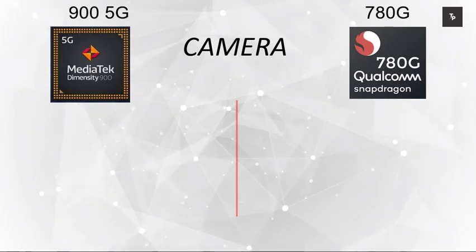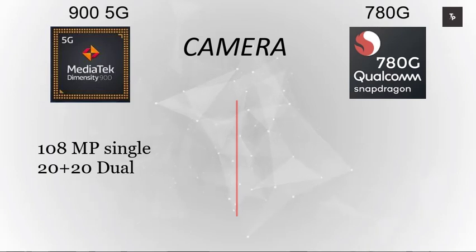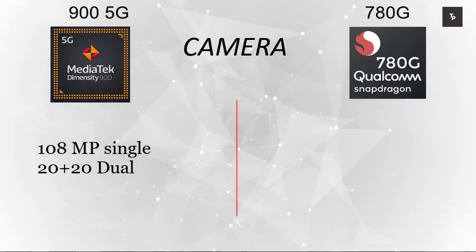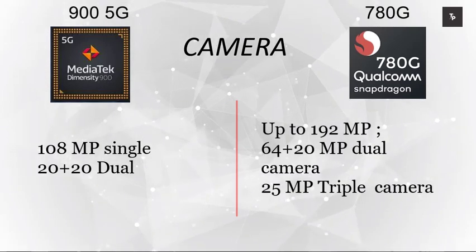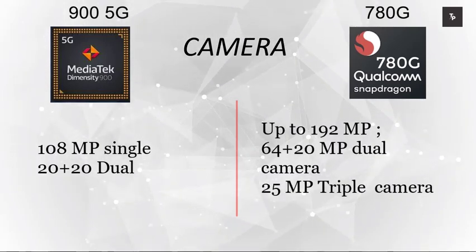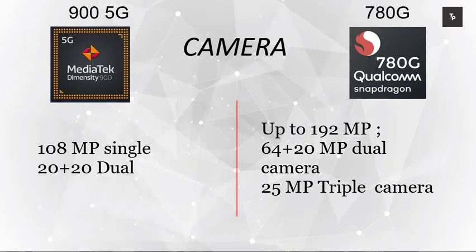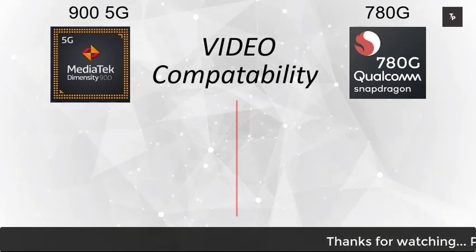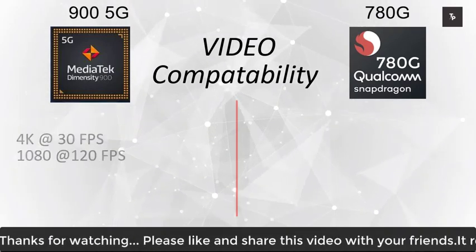Moving on to camera support, the maximum camera resolution the MediaTek Dimensity 900 can handle is 108 megapixels — currently the largest sensor available in the market — along with a 20+20 megapixel dual camera setup. The Snapdragon 780G can support up to 192 megapixels, a 64+20 megapixel dual camera, and a 25 megapixel triple camera.